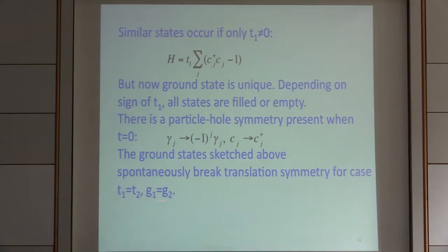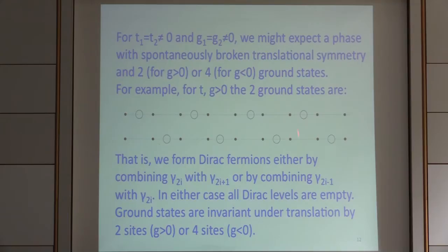If we consider the case where T1 equals T2 and G1 equals G2 — full translational symmetry — these ground states are simple candidate cartoon pictures for what the ground states might actually look like. With T1, T2, G1, G2 all nonzero, depending on the sign of T, we favor either the state where everything is empty or filled, but we still have a two-fold degeneracy because we can translate by one site.